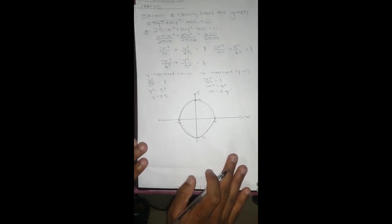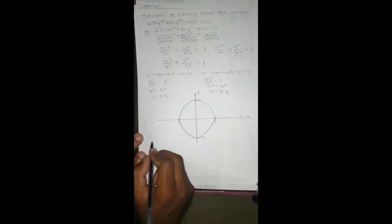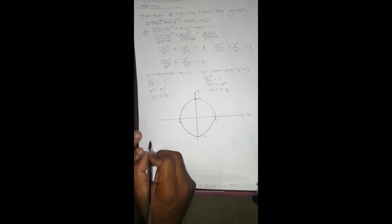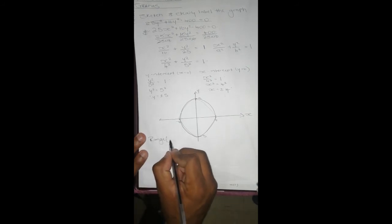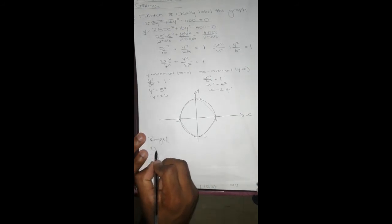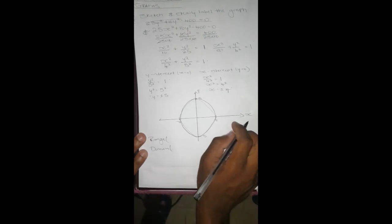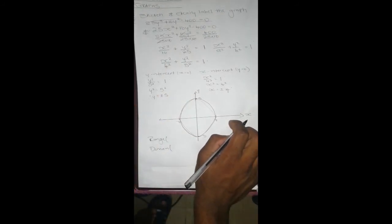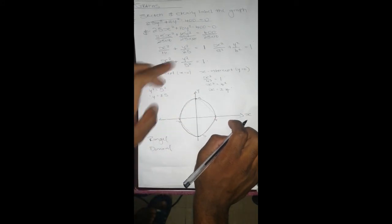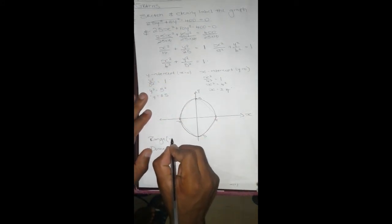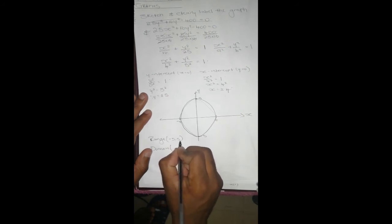Sometimes they would ask you what is the range of this graph and what is the domain. The range is the y values that this graph reaches. If you check the y values, it's from -5 to 5, so it's going to be -5 to 5. And the x values are -4 to 4.